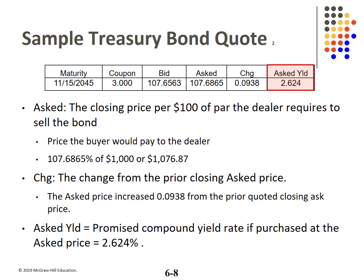Note that the yield is the yield to call if the price is above par, and the yield to maturity if below par. The yield calculation does use semi-annual compounding.